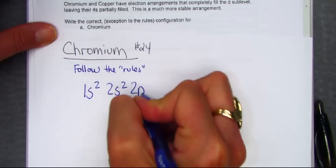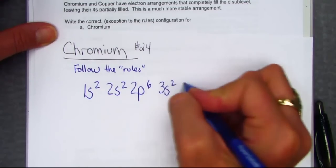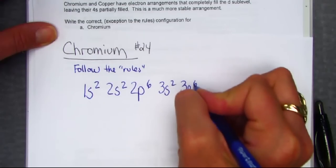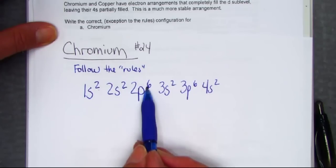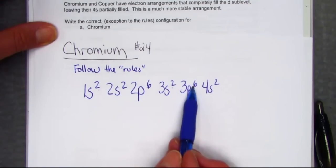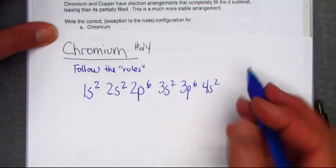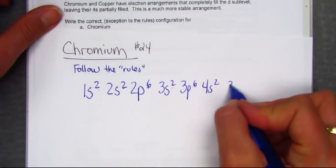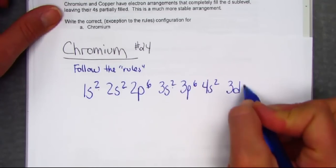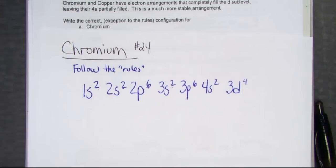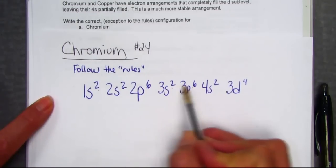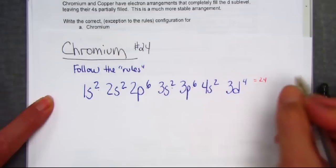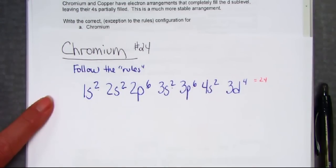1S2, 2S2, 2P6, 3S2, 3P6, 4S2, let me count. 2 and 2 is 4, 6 gets me to 10, 11, 12, 18, 19, 20. After the 4S, we begin to fill the 3D. We have 4 to place into that 3D sublevel. And remember, 2, 2 is 8, 10, 12, 18, 20, 24. So, the superscripts do indeed count for all 24 electrons.